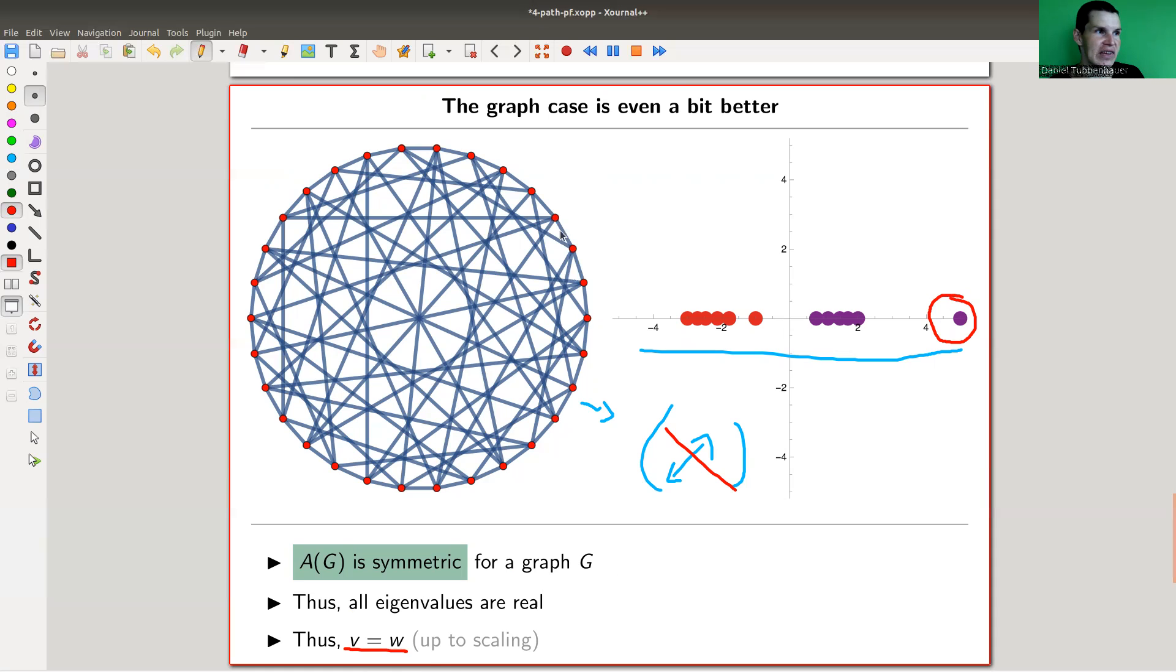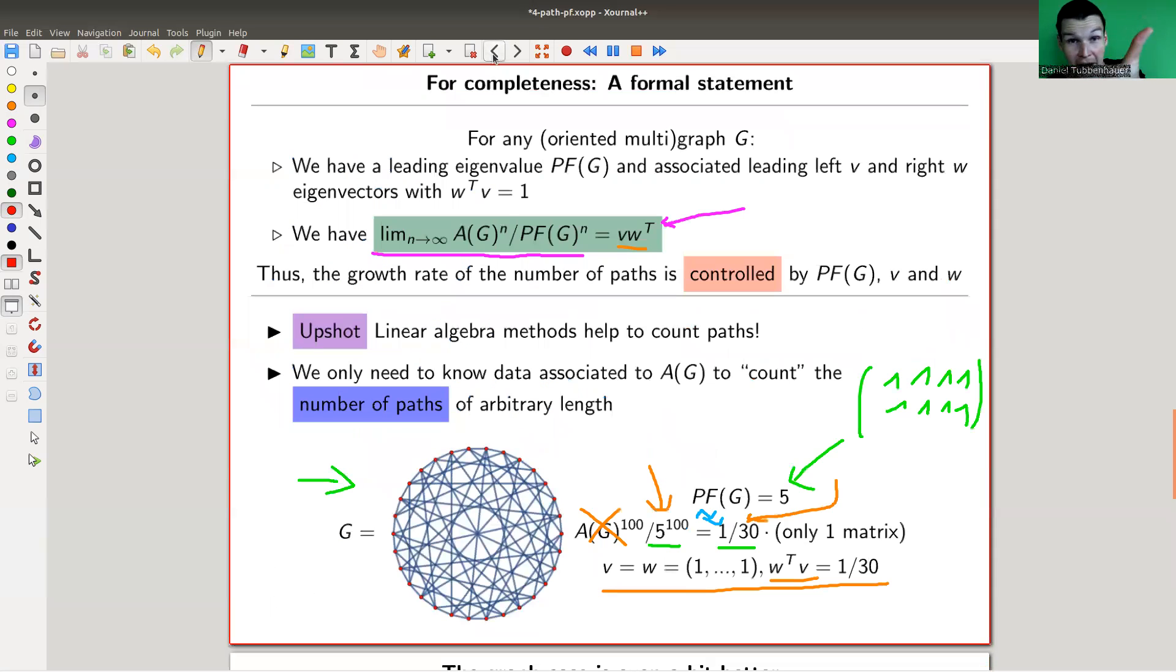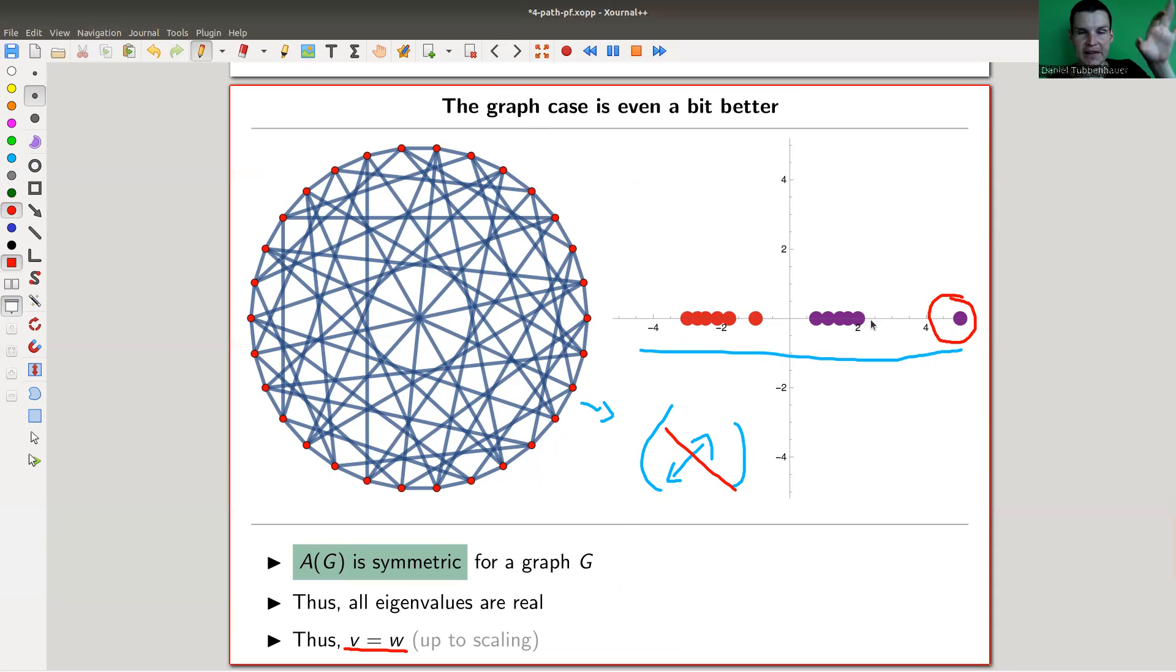So the whole setting actually gets much easier. You only need to compute one eigenvalue. So in order to get this one here, you only need to compute one eigenvector and one eigenvalue. And the eigenvalue is clearly by the symmetry of the system just the biggest one somewhere to the right of your picture.